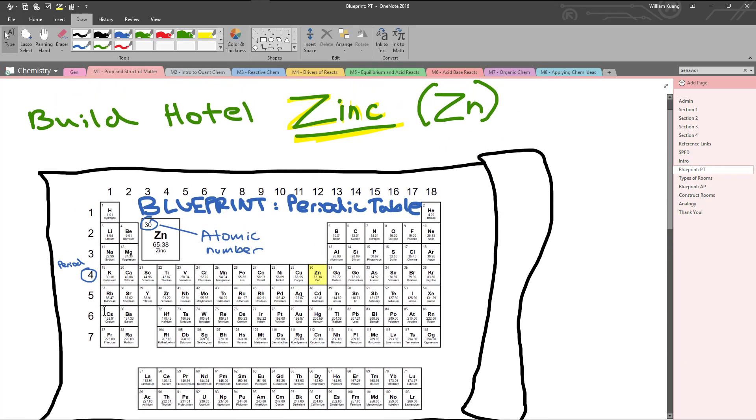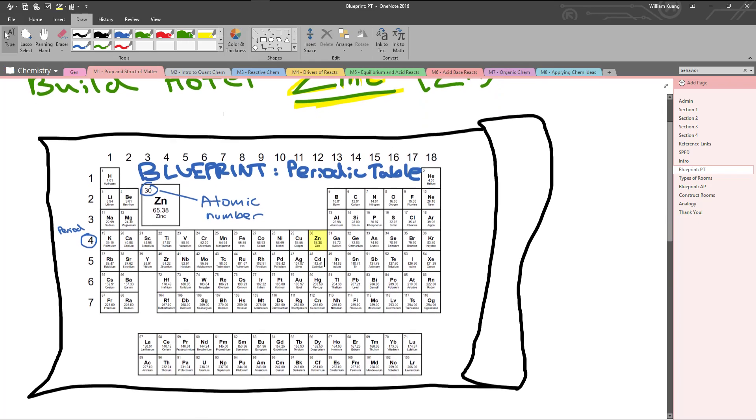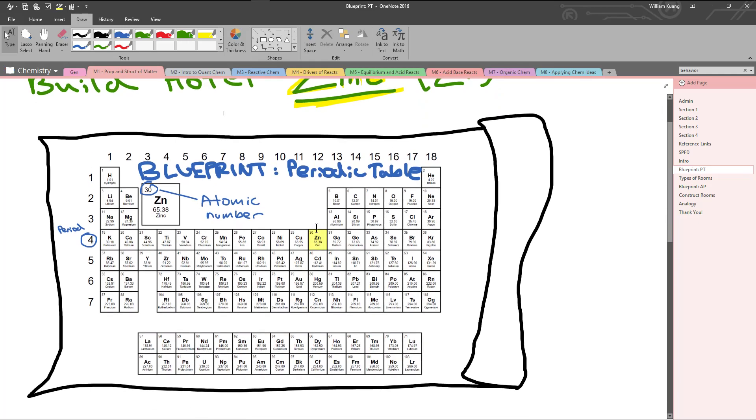So let's get to it. The first hotel we're going to build is the Hotel Zinc. The first thing we'll do is unroll the blueprint for the periodic table and locate Zinc on the table. If you notice, you have Zinc right here. You can tell that it exists in Period 4, and it has an atomic number of 30.